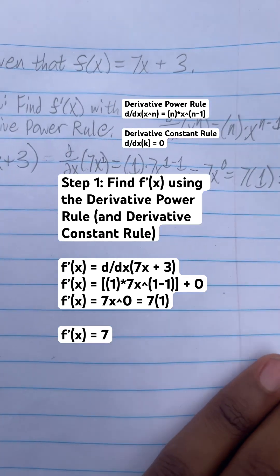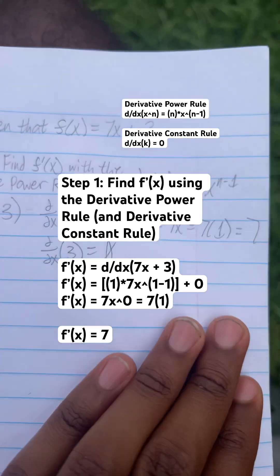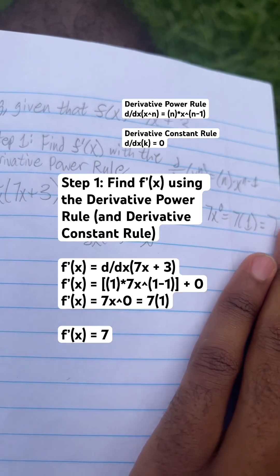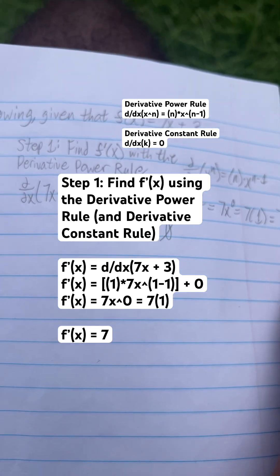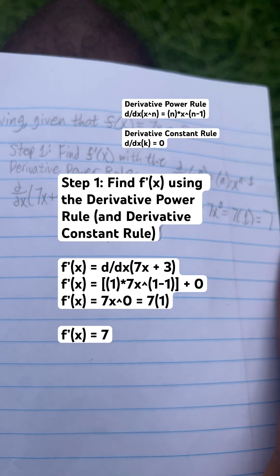And the derivative of 3, because you know you're doing them separately, the derivative of 3 is just 0 with the derivative constant rule.